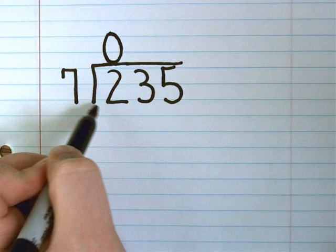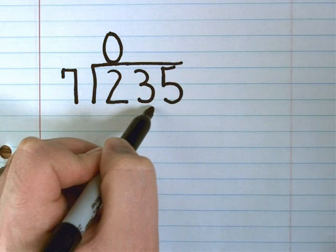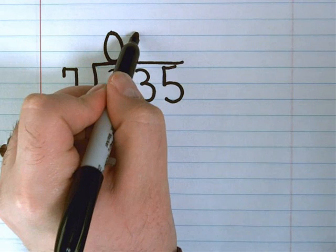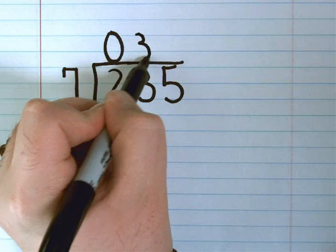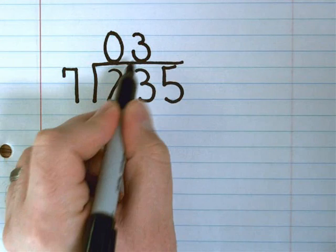I have to ask myself, how many times would 7 go into 23? Three times, because 7, 14, 21. If I go any larger, it'll be 28, which is too much.